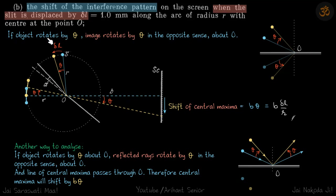This diagram illustrates that if the object rotates by an angle theta, then the image rotates by the same angle theta in the opposite sense. That's what happened here.